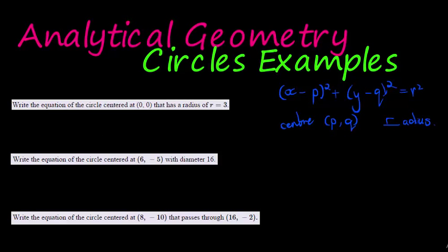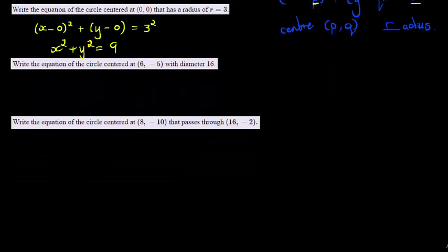Let's look at a few example questions. Write the equation of a circle centered at (0,0) that has a radius of 3. We can literally just use this: x minus 0 squared plus y minus 0 squared, and then the radius is 3. Very important in our equation, it's 3 squared. So if we simplify this, x minus 0 is just x, so basically we have x squared plus y squared is equal to 9. That is my answer.